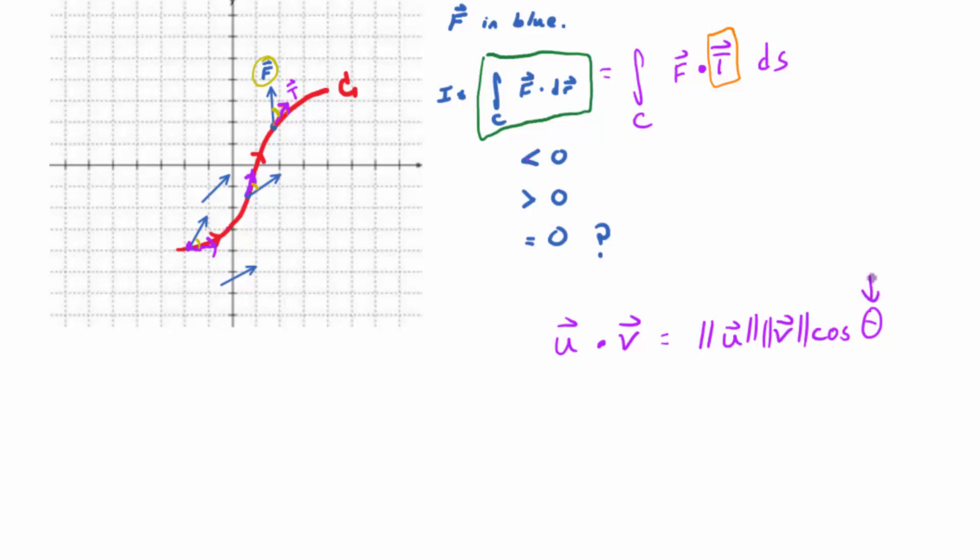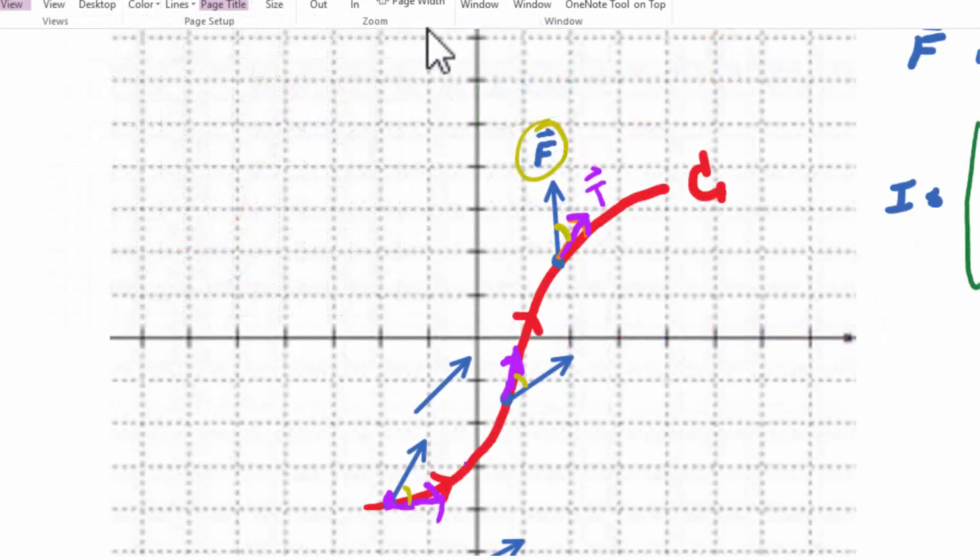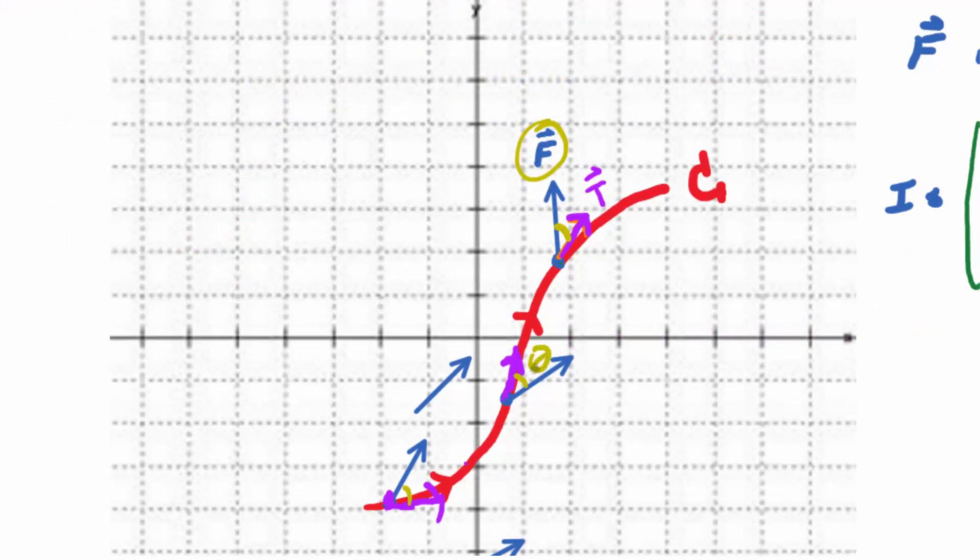If this angle is acute, what's the value sign-wise, S-I-G-N, of the cosine? In the first quadrant, cosine's positive. Then that means that if this guy's acute, that means that the dot product is positive, because we're assuming non-zero vectors. So magnitude U is positive, magnitude V is positive, cosine theta is positive when theta is acute. So you've got a positive times a positive times a positive. It's greater than zero.